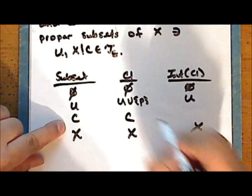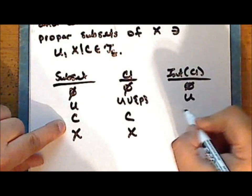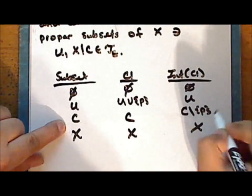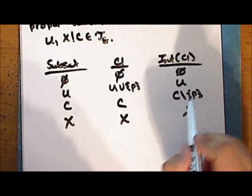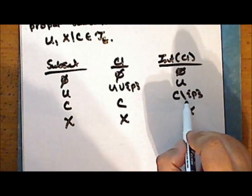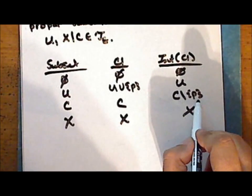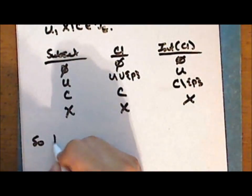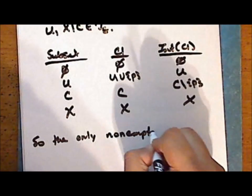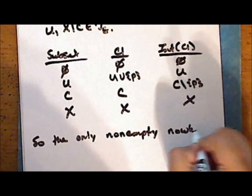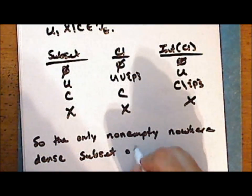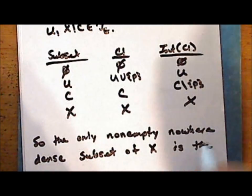The set C is its own closure, and the interior of the set C is the complement of the singleton containing the point P intersected with C. Notice that the only non-empty subset for which the interior of the closure is the empty set is the singleton containing the point P. So the only non-empty nowhere-dense subset of the space X is the singleton set containing the point P.